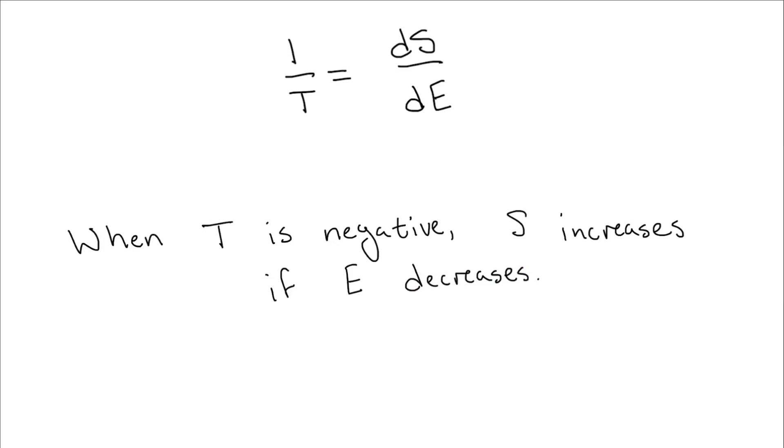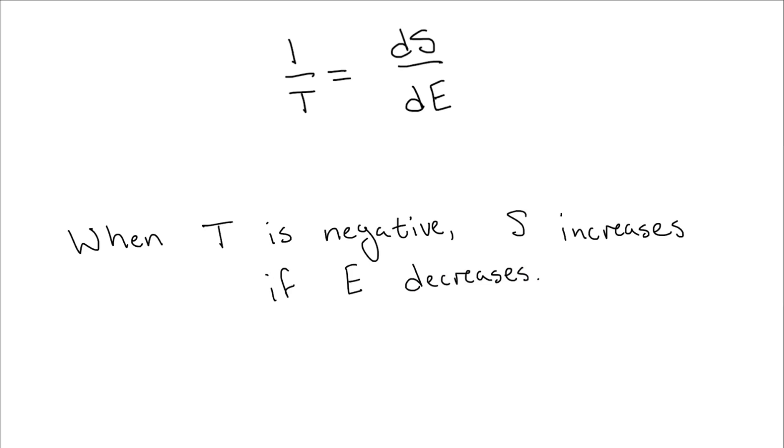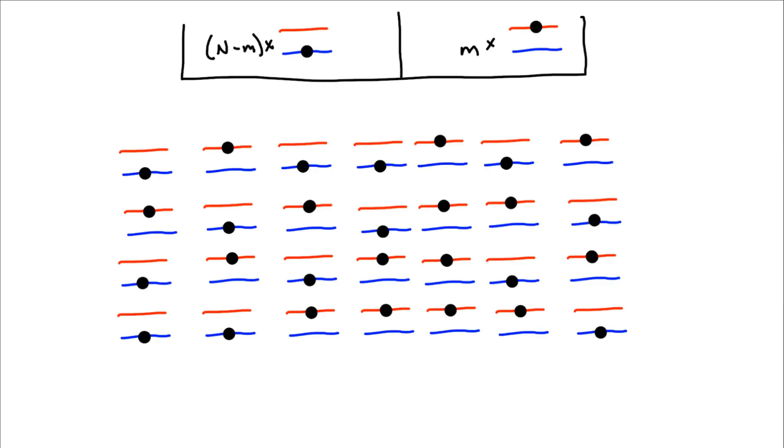Let's look at an example where this happens. Say we have a large number, n, of particles which can exist in one of two states, a ground state with zero energy and an excited state with energy epsilon. Now we give the system m units of epsilon so that the total energy is given by E equals m epsilon.